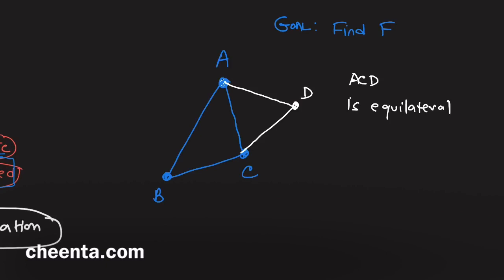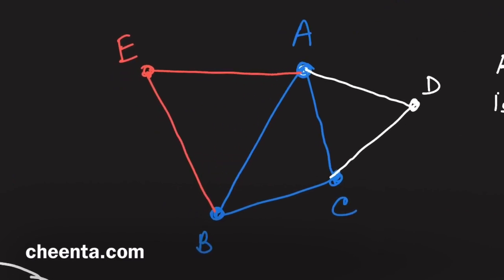Then draw another triangle here, with point E, so ABE is equilateral.